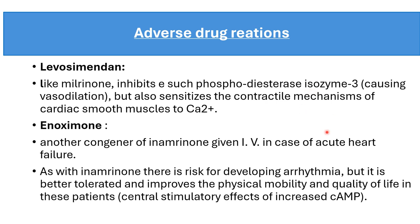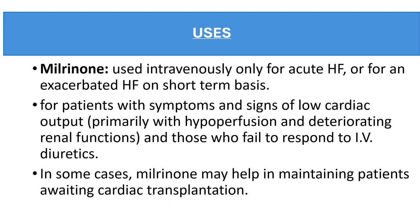Levosimendan, like milrinone, also inhibits phosphodiesterase 3 enzyme causing vasodilation, and it also sensitizes the contractile mechanism of cardiac smooth muscle to calcium. Anoximone is another congener of inamrinone given intravenously in cases of acute failure. As with inamrinone, there is risk of arrhythmia, but it is better tolerated and improves physical mobility and quality of life.